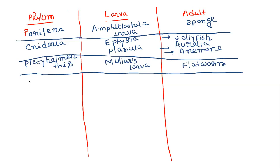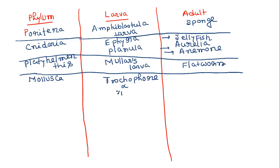Phylum nematoda is not particularly important for the exam. In case of phylum mollusca, the larval stages are trocophore larva and veliger larva.